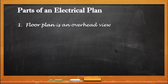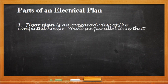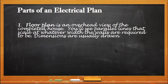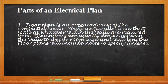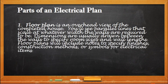First, we will have the floor plan. It is an overview of the completed house. You'll see the parallel lines that are scaled at whatever width the walls are required to be. Dimensions are usually drawn between the walls to specify room sizes and wall lengths. Floor plans will include notes to specify finishes, construction methods, or symbols for electrical items.